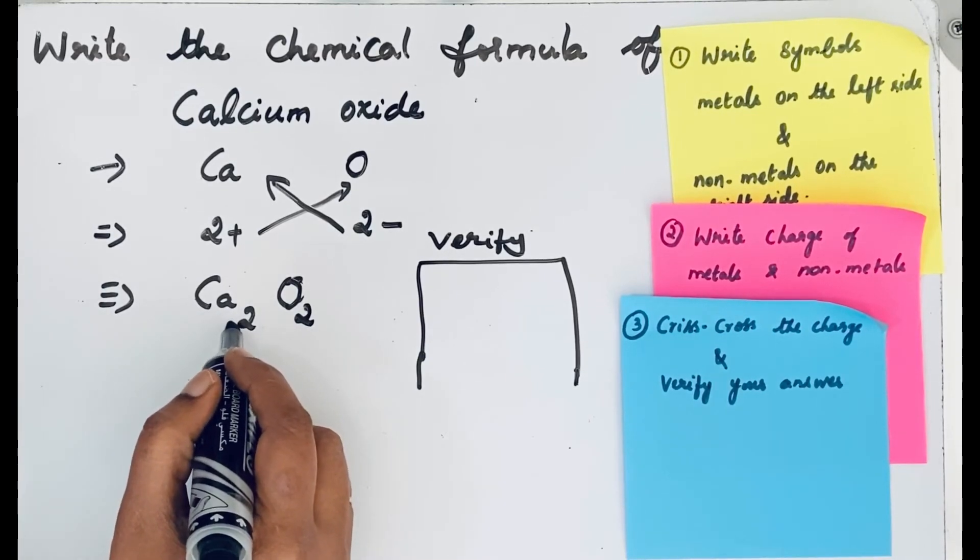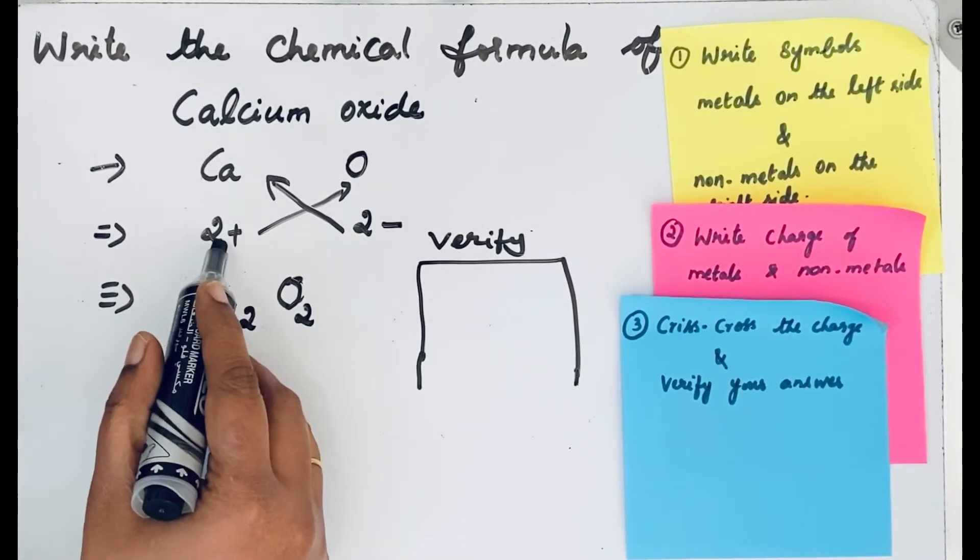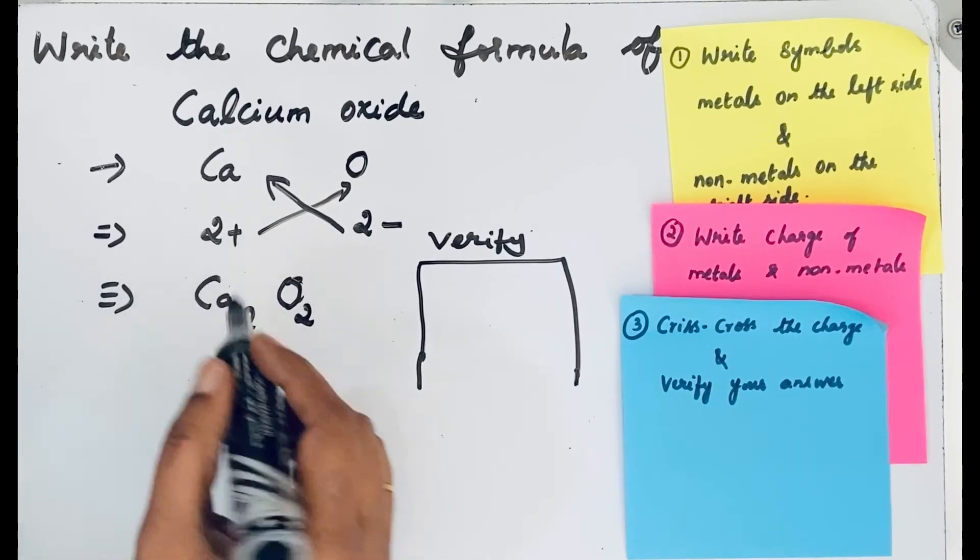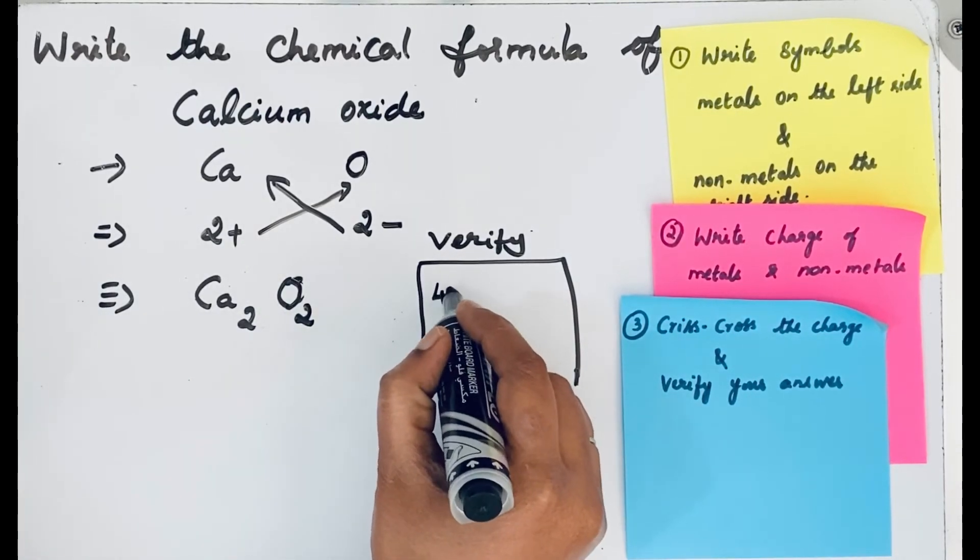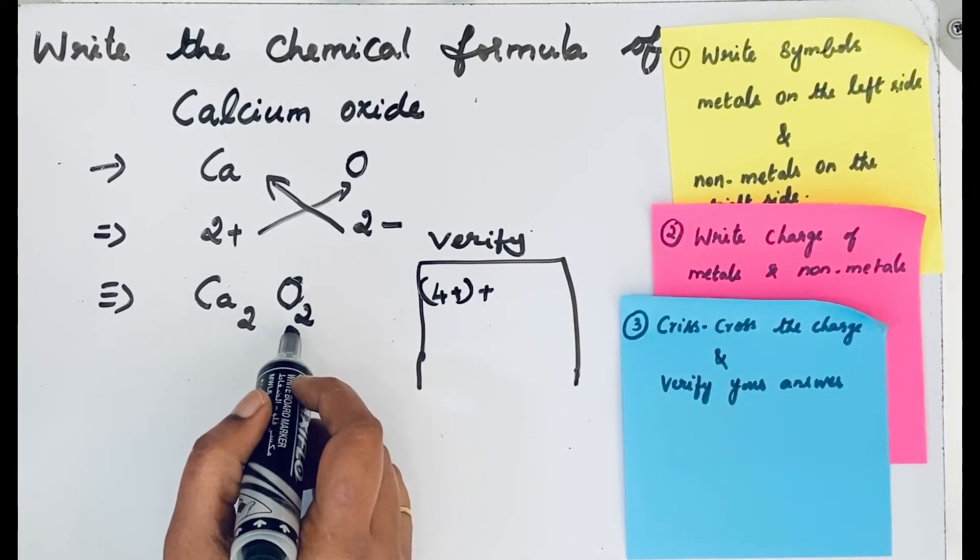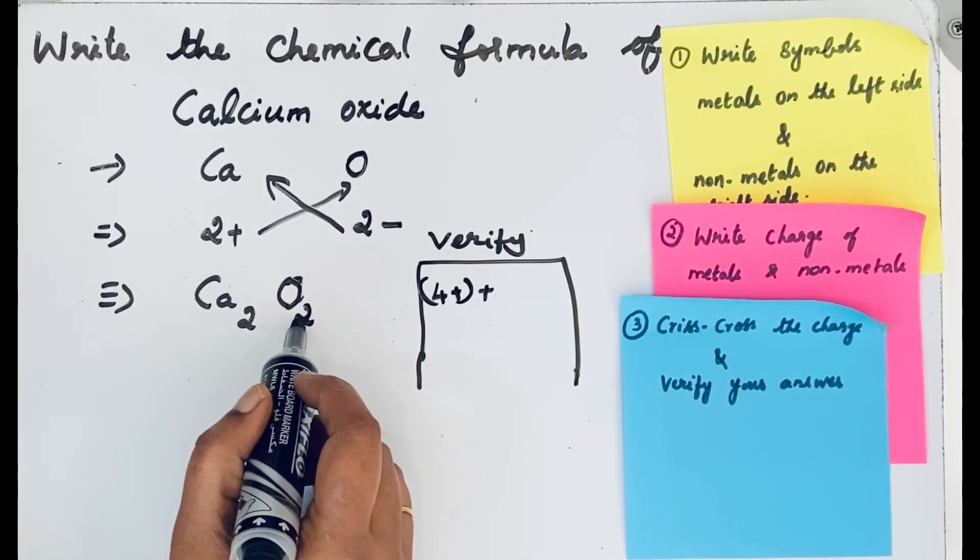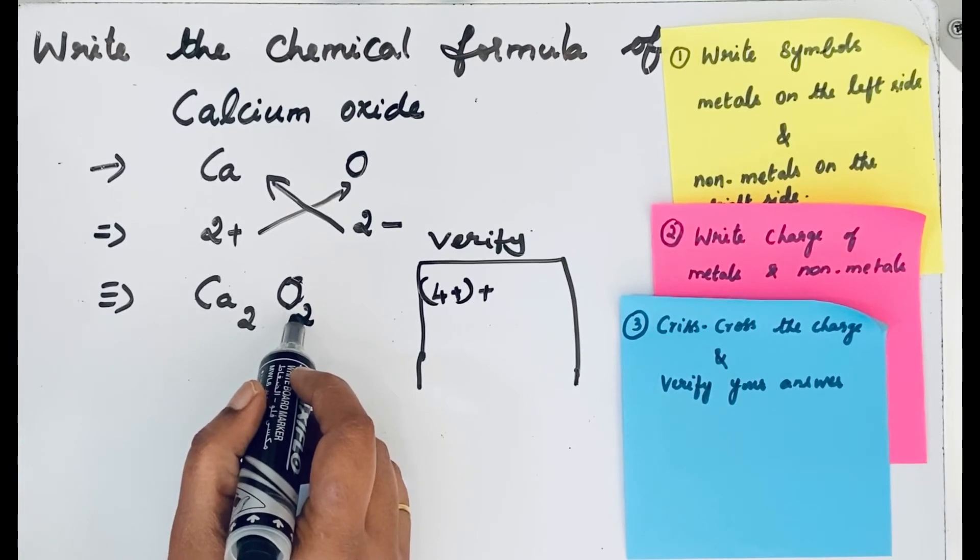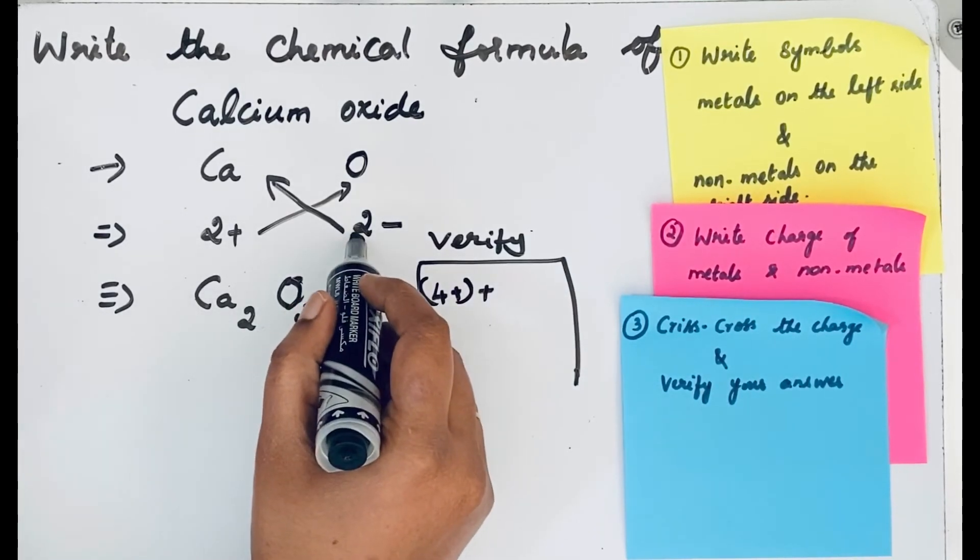Two calcium ions, so what is the charge? 2+. So 2 times 2+ equals 4+. Now for oxide also, you see here the subscript is 2, meaning there are 2 oxide ions.